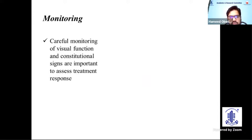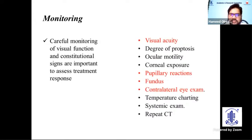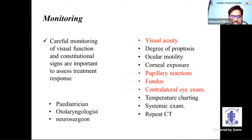Monitoring is very important. Careful monitoring of visual function and constitutional signs is essential to assess treatment response — especially visual acuity, pupillary reactions, fundus examination, and contralateral examination. Consultation with a pediatrician for systemic status, an otolaryngologist in cases of sinusitis, and a neurosurgeon in cases of intracranial extension of orbital cellulitis are all required.